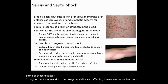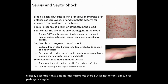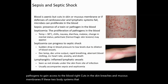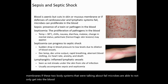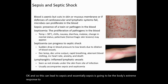Blood is typically axenic — so no normal microbiota — but it's not terribly difficult for pathogens to gain access to the blood through things like cuts in the skin or breaches in mucous membranes. If these two body systems fail, microbes are able to not only get into the blood but start replicating in the blood, and this can lead to sepsis. Essentially, sepsis is the body's extreme response to an existing infection, and it can be life-threatening.